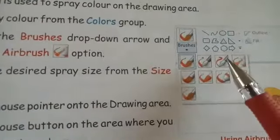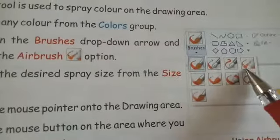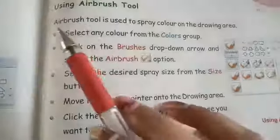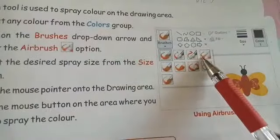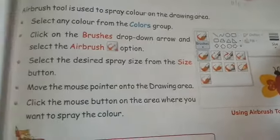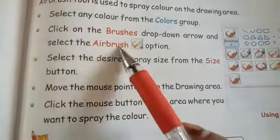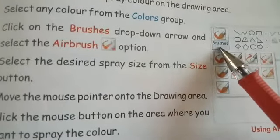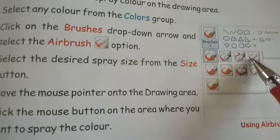Select any color from the color group. After choosing the airbrush, go to the color box and choose a color as per your choice. Then click on the brushes drop-down arrow and select the airbrush option. Click the drop-down arrow and from the list of brushes, choose the airbrush tool.